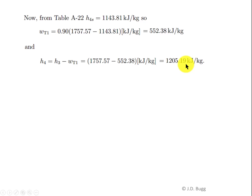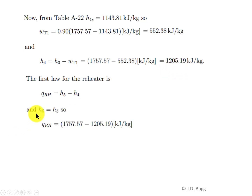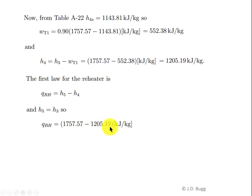For the reheater, the heat transfer per unit mass is Q_RH = H5 − H4. Since T5 = T3 = 1600 K and enthalpy is only a function of temperature for an ideal gas, H5 = H3 = 1757.57 kJ/kg. Therefore Q_RH = 1757.57 − 1205.19 = 552.37 kJ/kg.